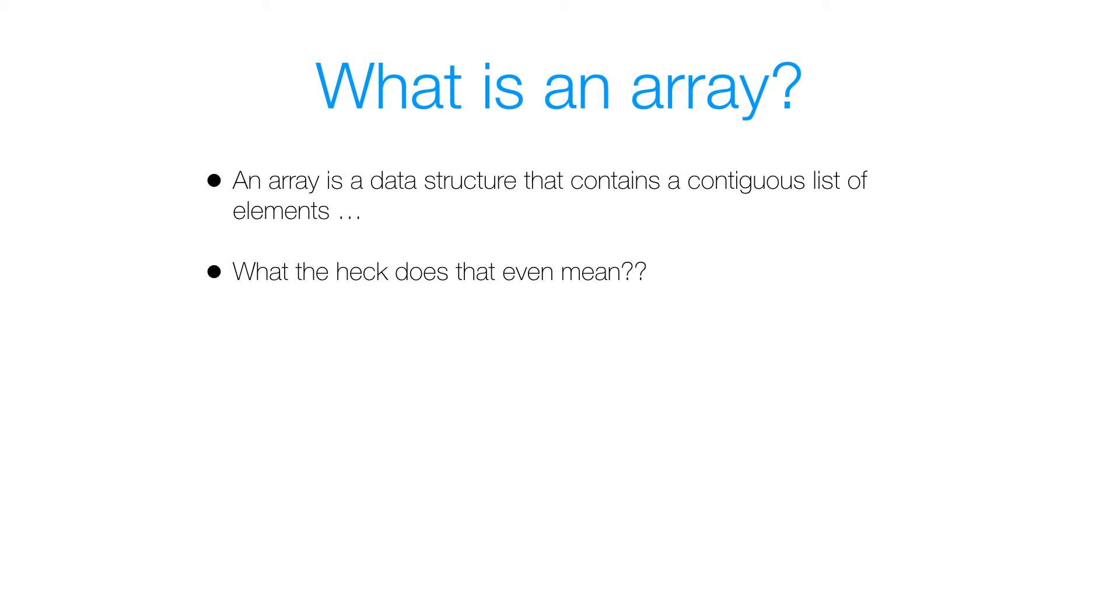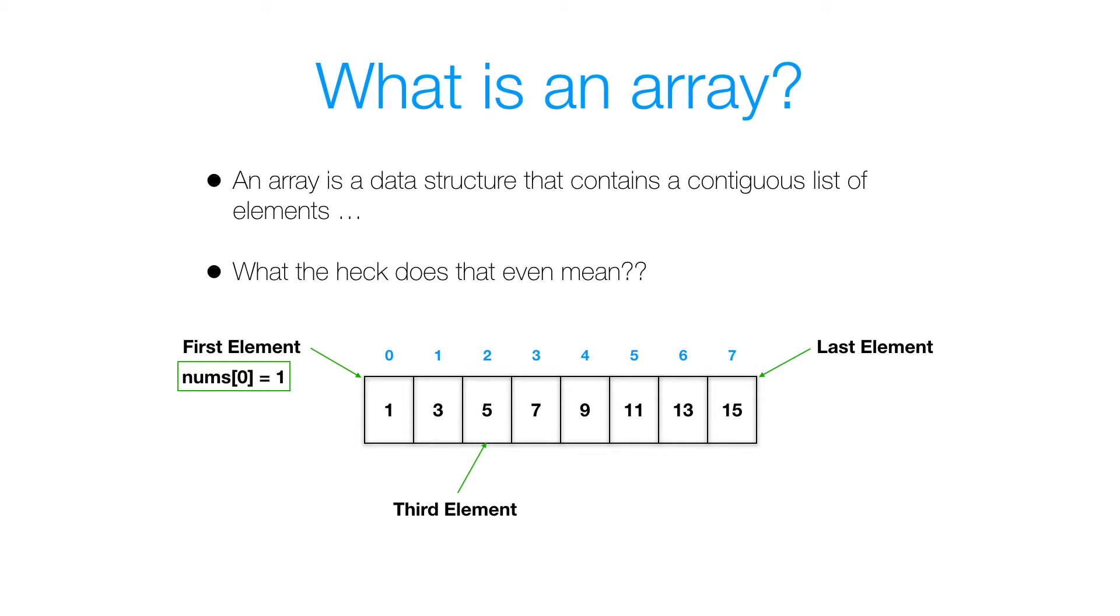As for the contiguous list of elements part, I think it's easy to visualize with an array. So this is what an array looks like. We have the numbers in black, that's our data, and we have the numbers in light blue, which are the numbers essentially used to grab that data. Our first element is the number one, our last element is the number 15, and the third element is the number five. And how we actually get that data is using those light blue numbers. So we'd say, my array is called nums in this case. I'll say nums in square brackets, I put what index I want to get the data from. In this case, give me the data at index zero, and that gives me the data one. Likewise, for the last element, nums of seven will give me the value 15. For the third element, nums of two would essentially give me the value five.